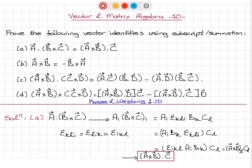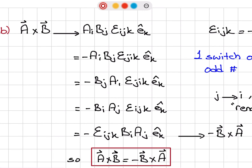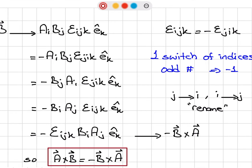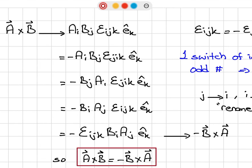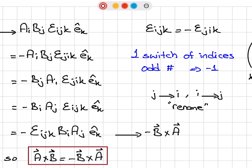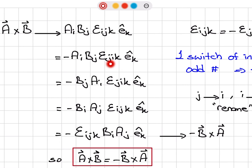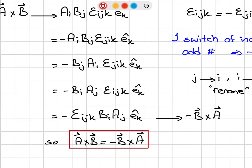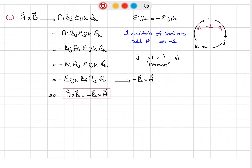For part B, A cross B is A_I B_J epsilon_IJK e_K-hat. Writing epsilon_JIK instead requires a minus sign, since that's an odd number of index position switches — one position shift — and IJK is the positive direction while JIK is the negative direction. So that's minus A_I B_J epsilon_JIK e_K-hat, which equals minus B_J A_I epsilon_JIK e_K-hat. Renaming J as I and I as J gives minus epsilon_IJK B_I A_J e_K-hat, which is minus B cross A. Therefore A cross B equals minus B cross A.